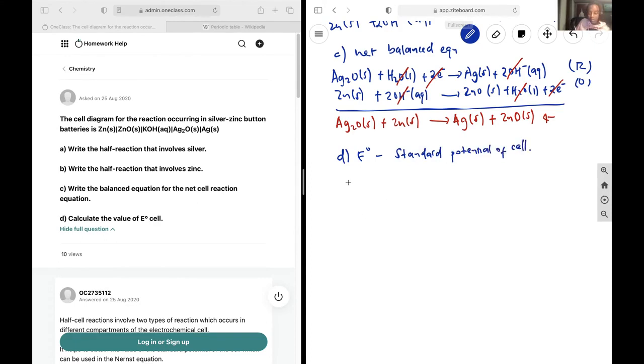And so the standard potential of the cell is equal to the standard potential of the reduction half minus the standard potential of the oxidation half.